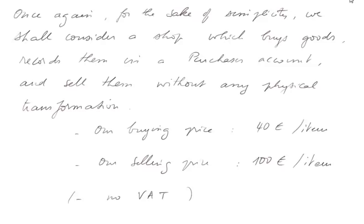For the sake of simplicity, we shall consider a shop which buys goods, records them in a purchases account as traditional accounting does, and sells them without any physical transformation. Our buying price will be 40 euros per item — all items the same — and our selling price will be 100 euros per item. There will be no VAT, Value Added Tax.